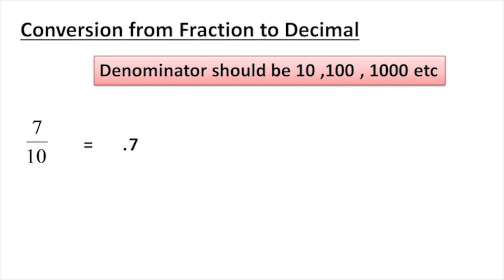If the decimal has 1 digit after the decimal point, then the denominator is 10. For example, the decimal 7 gives us 0.7. The answer is 0.7.